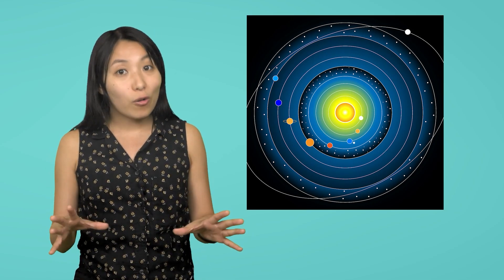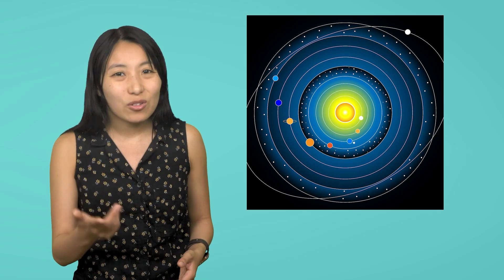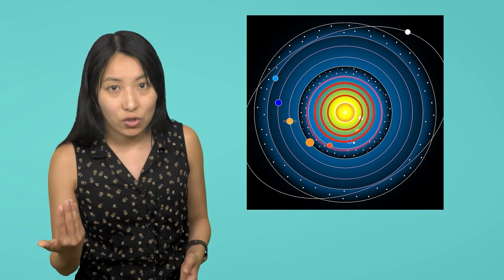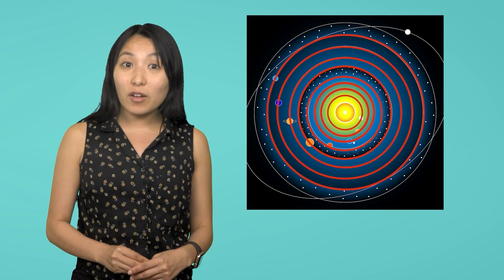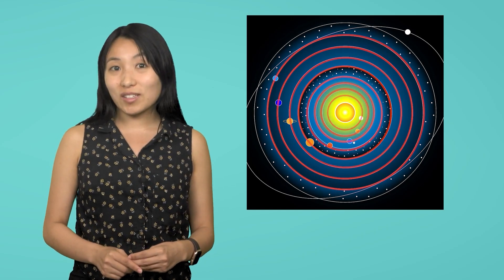While Copernicus didn't get it all right, for example, he still thought every orbit was a perfect circle, his heliocentric model was a huge leap forward in understanding the solar system.